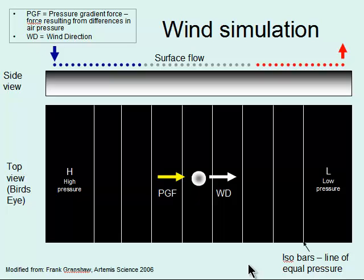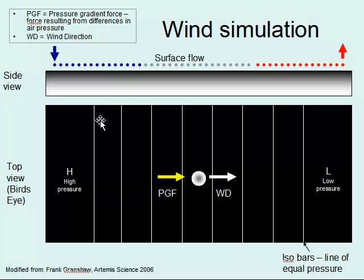We're going to start with this wind simulation. We've got a surface that's not moving, with a high pressure zone on one side and low pressure on the other, so winds will travel from left to right. We have the pressure gradient force, produced by the difference in pressure between the high and low zones. The white lines indicate isobars — lines of equal pressure. Looking straight down on the surface, air sinks at the high pressure zone, travels along the surface, and rises at the low pressure. The white line shows the resulting wind direction.